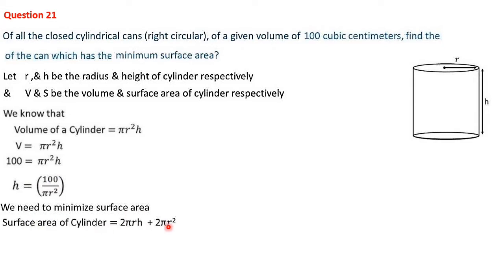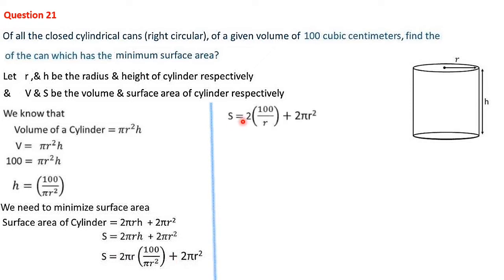The surface area is S = 2πrh + 2πr². Substituting h = 100/(πr²): S = 2πr · 100/(πr²) + 2πr² = 200/r + 2πr². Writing this as S = 200r⁻¹ + 2πr² makes differentiation straightforward.